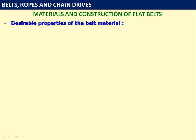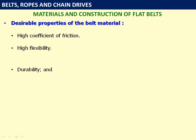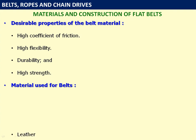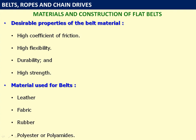Materials and construction of flat belts. Desirable properties of the belt material are: high coefficient of friction — since the belt operates on the concept of friction, more friction means more power — high flexibility, and durability with good strength. The commonly used materials for belts are leather, fabric, rubber, and polyester or polyamides.